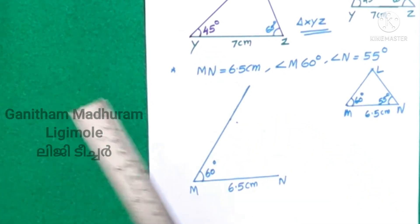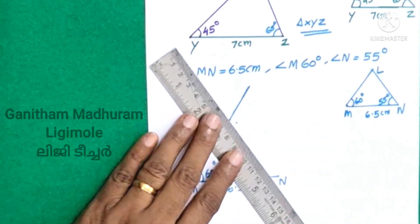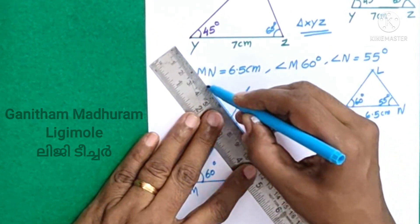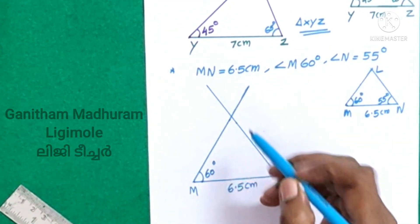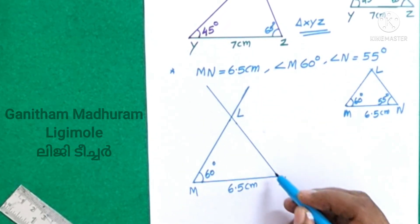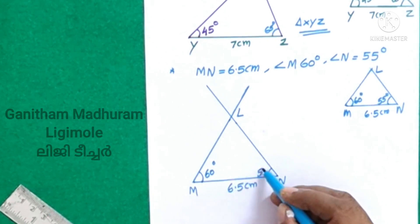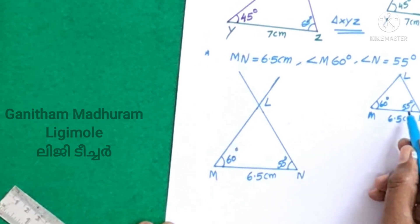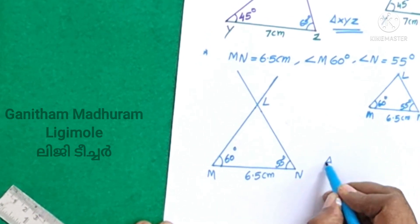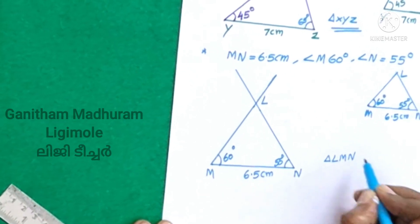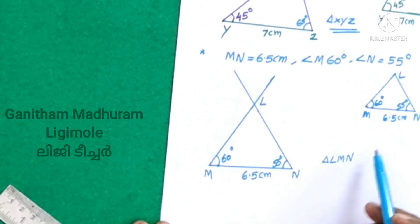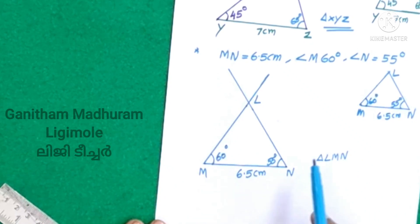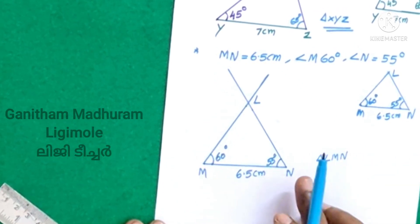As we settle down to this, we are going to return to this table. We have to add this one. This is 3 degrees. We have to draw triangle L, M, N.